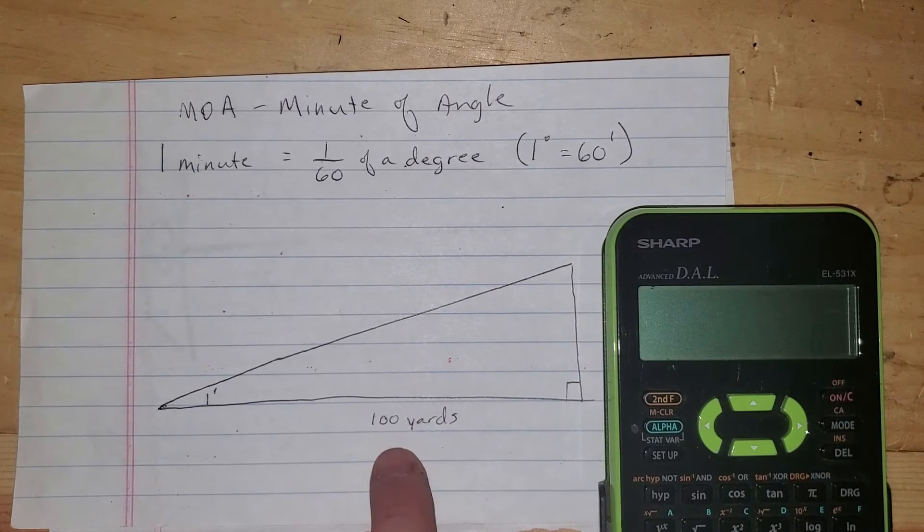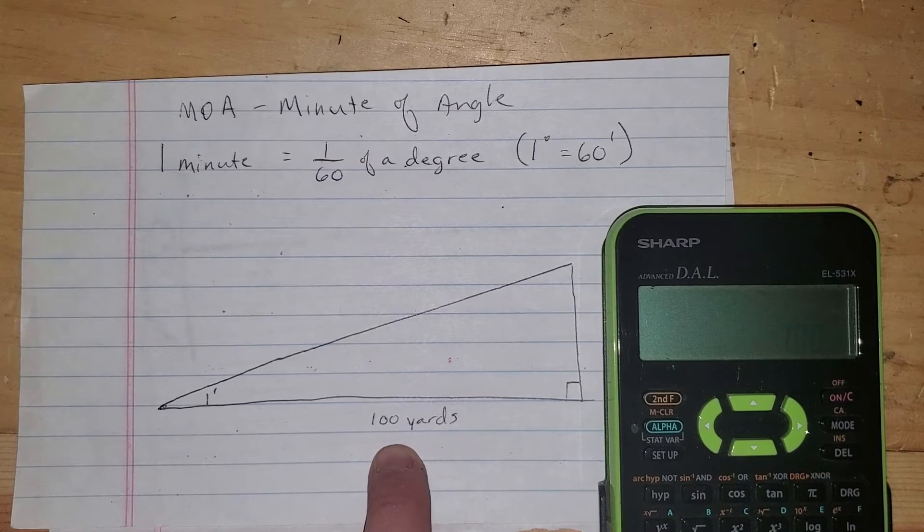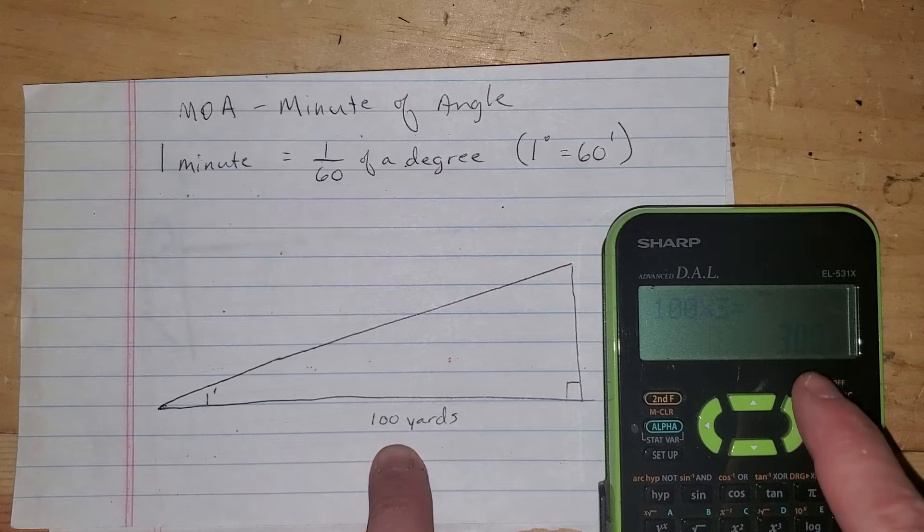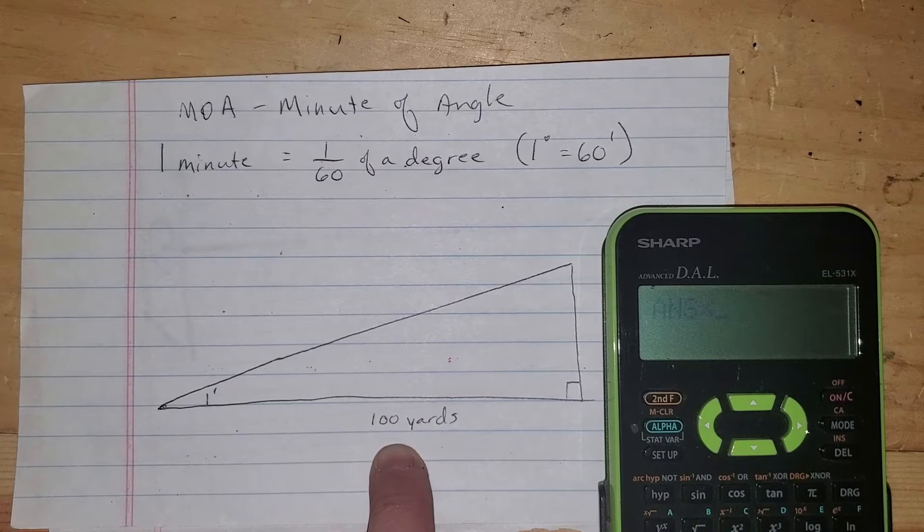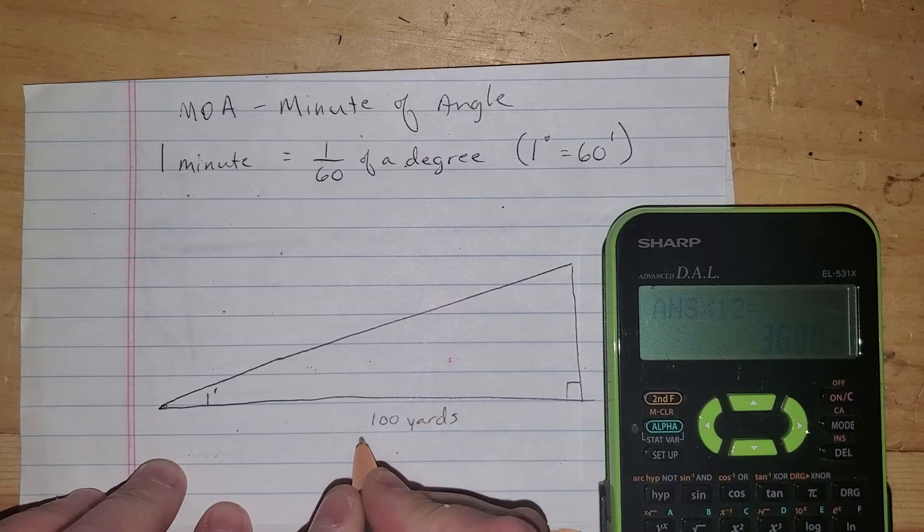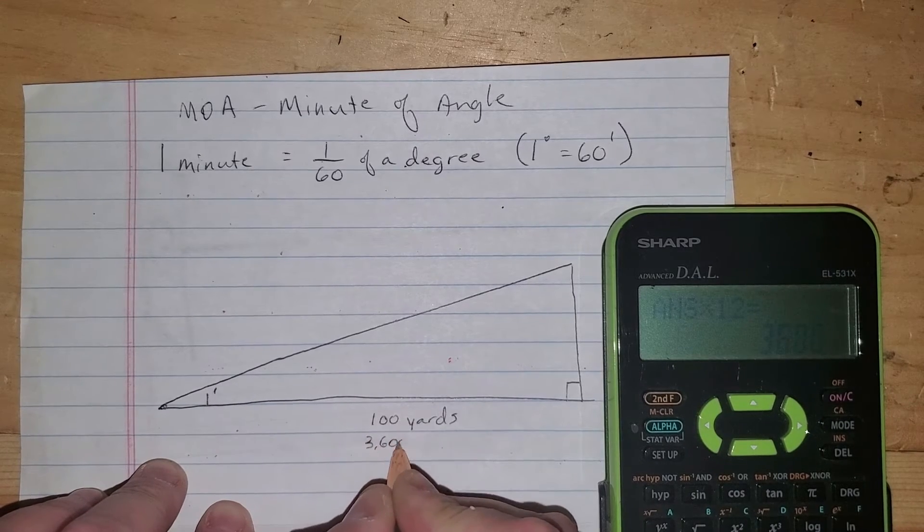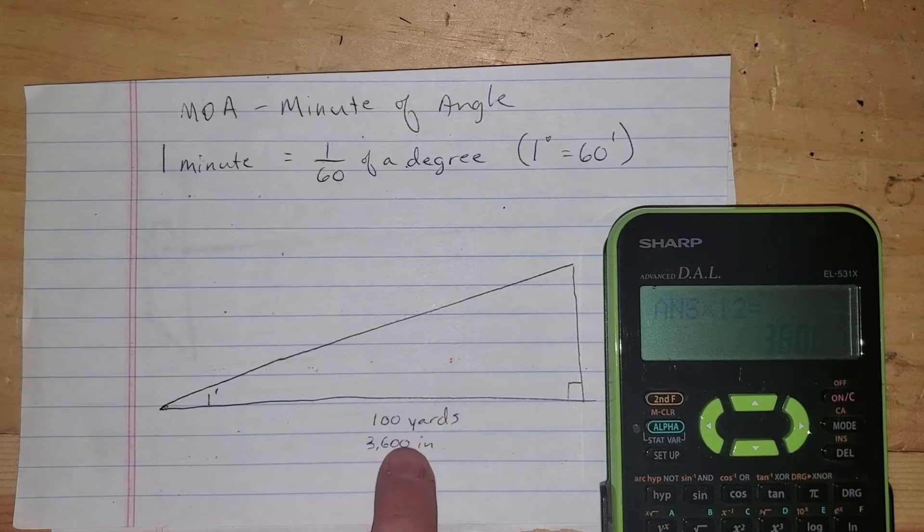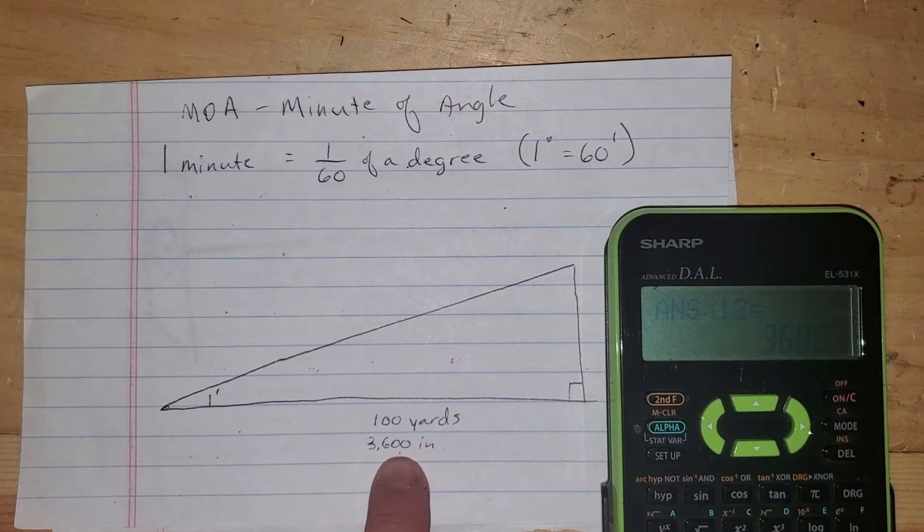Now the first thing we need to do is turn 100 yards. So I'm going to say 100 yards times three, that's going to give us 300 feet, and then times 12, and that's going to give us 3,600 inches, and that's going to come in handy in a second. So that's 3,600 inches.